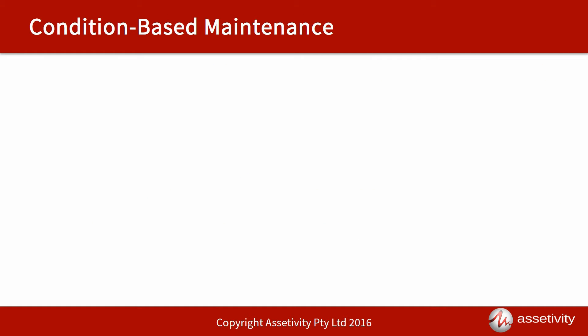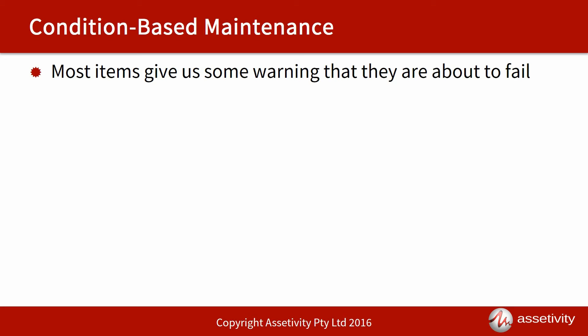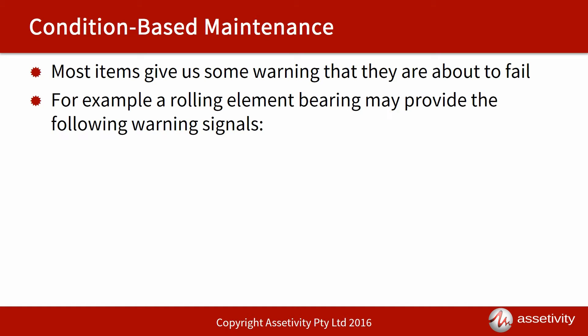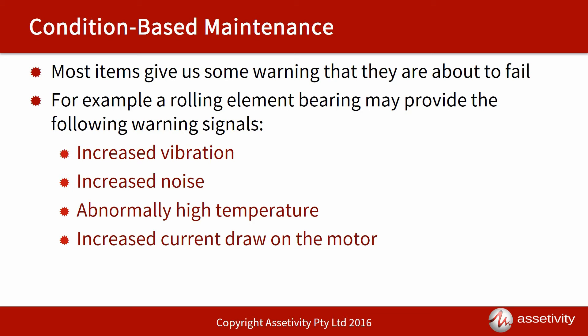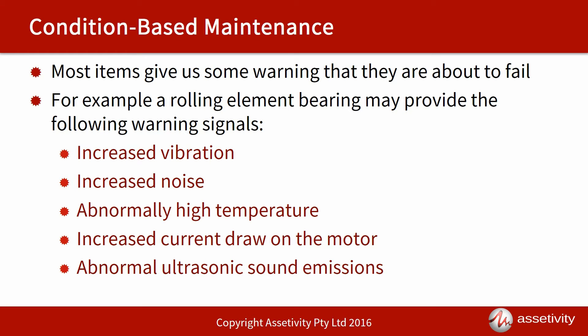In fact, most items give us some warning that they are about to fail, and some items actually give us multiple warnings. For example, if we looked at a rolling element bearing, the warning signals could include higher levels of vibration, noise that is higher than we would normally expect, abnormally high temperatures, increased current draw on the motor, abnormal ultrasonic sound emissions, or potentially even smoke — and a whole range of other potential warning conditions.